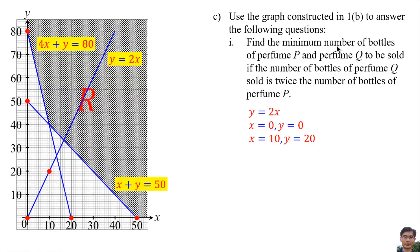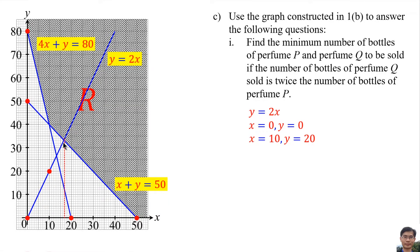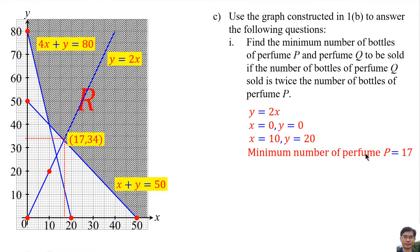We need to find the minimum number of bottles of perfume P and perfume Q. Each thread line Y equals X — we start from here and move up. The first point we reach in the shaded region gives the minimum number of perfume P and perfume Q to be sold. Both the X and Y values must be integers. At the intersection point X is about 16-point-something, but since X must be an integer, we choose 17. When X is 17, Y is 34. So the minimum number of perfume P is 17 and the minimum number of perfume Q is 34.